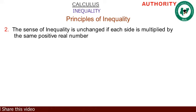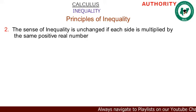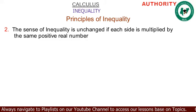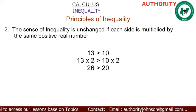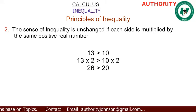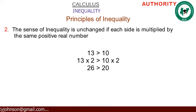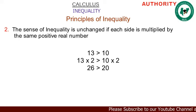Principle two: the sense of inequality is unchanged if each side is multiplied by the same positive number. For example, 13 > 10. Multiply both sides by positive 2: 13 × 2 = 26 and 10 × 2 = 20, so 26 > 20. The sense remains the same.